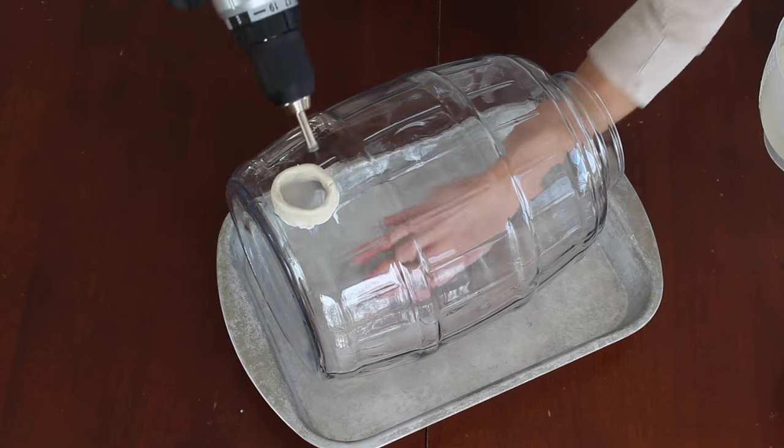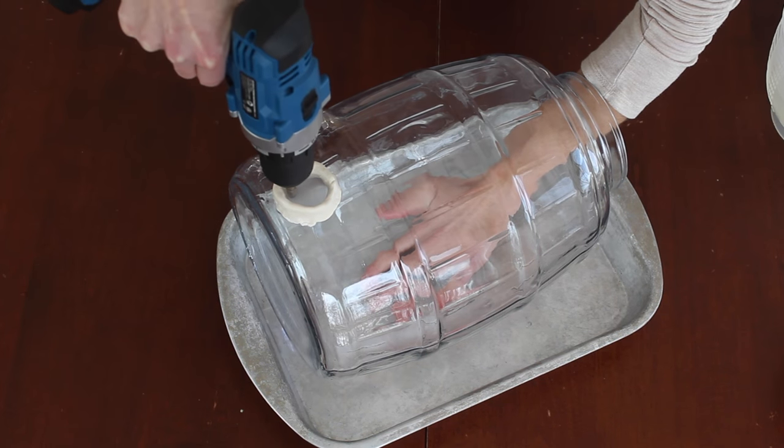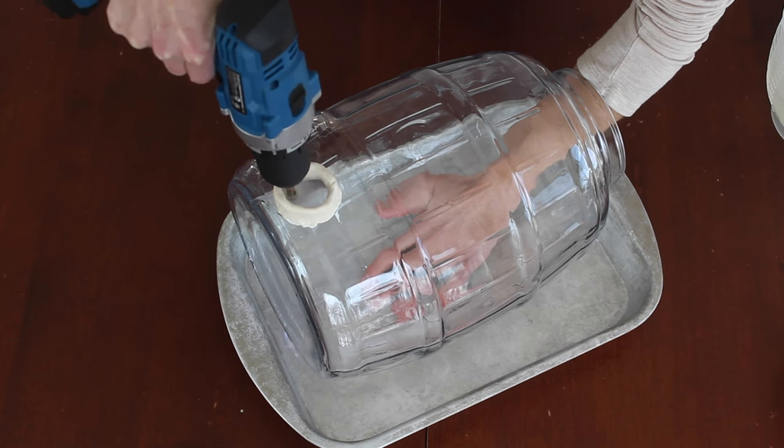So I gradually move my drill bit upward, starting at an angle and moving it to straight. And then as I go, I move my drill bit in small circles to really get down into the glass.